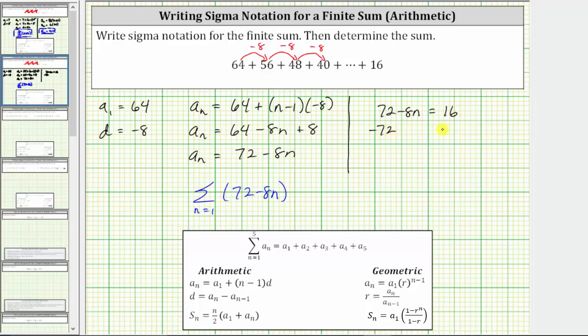Next step, subtract 72 on both sides. Simplifying, we have negative 8n equals 16 minus 72 is equal to negative 56.